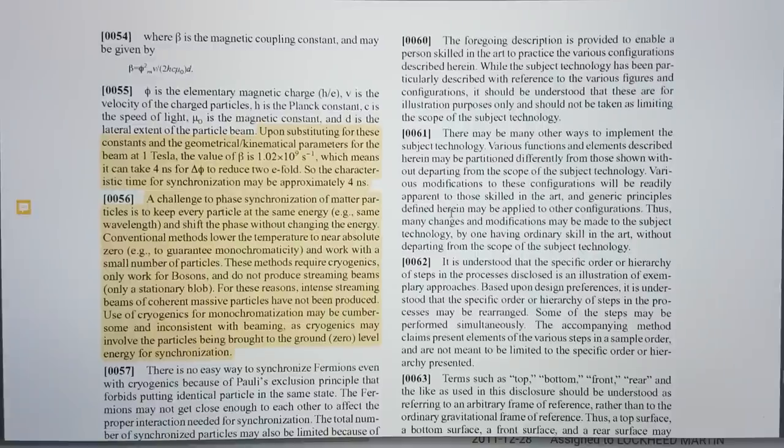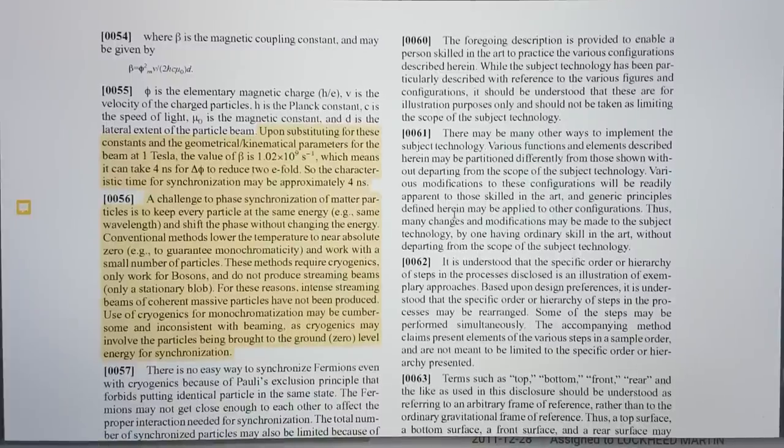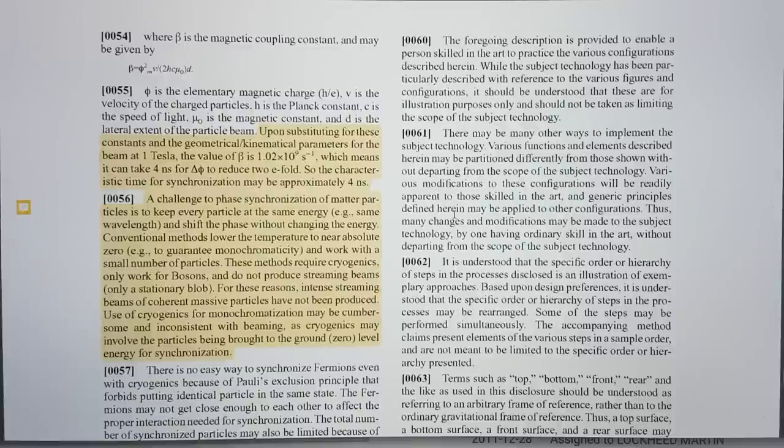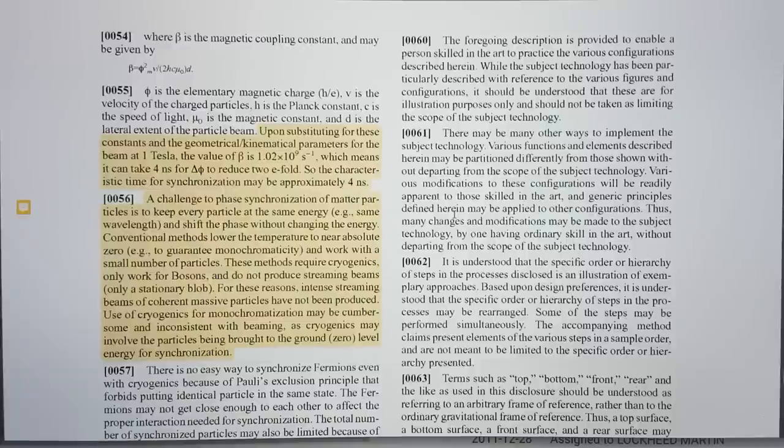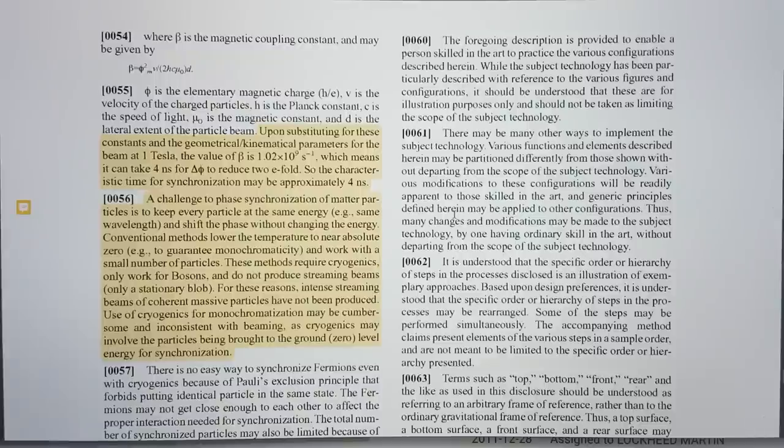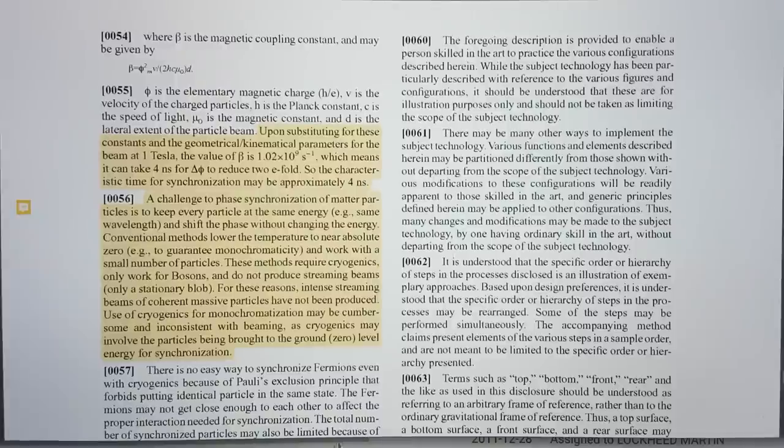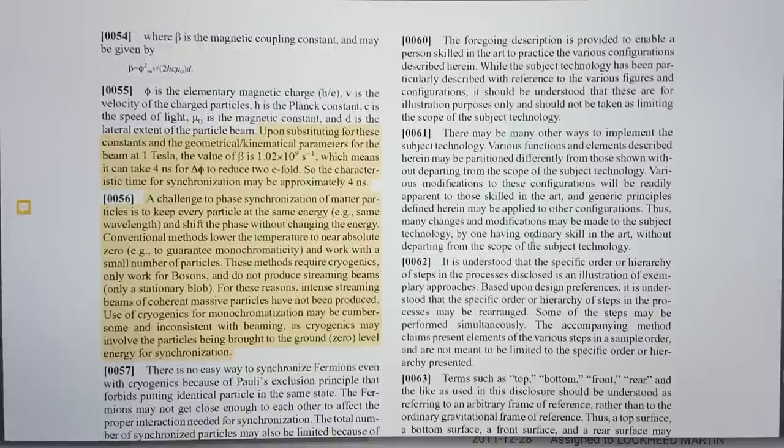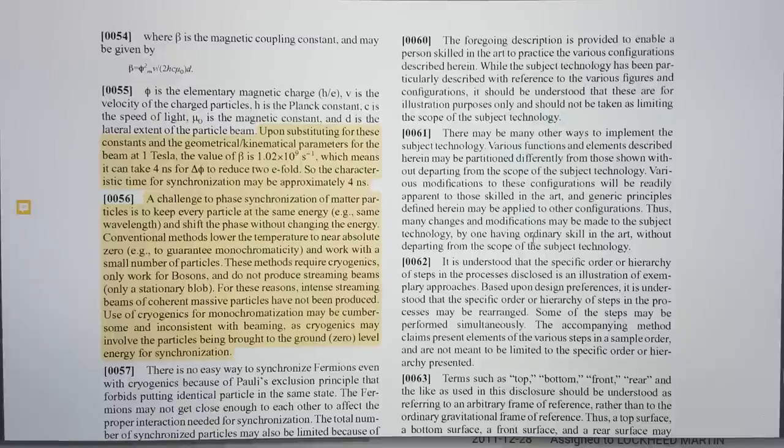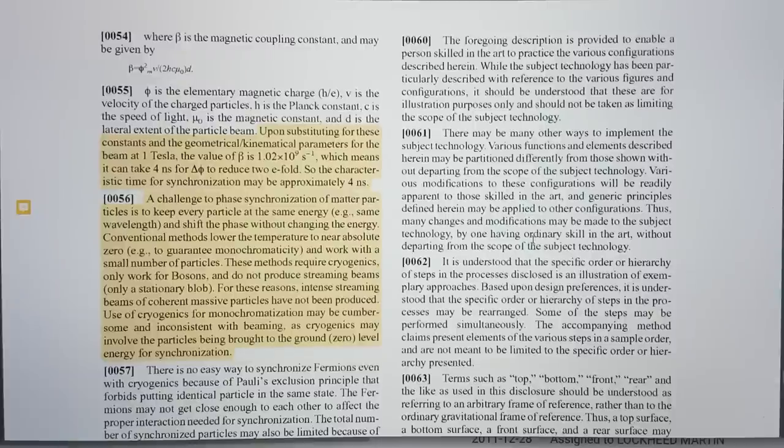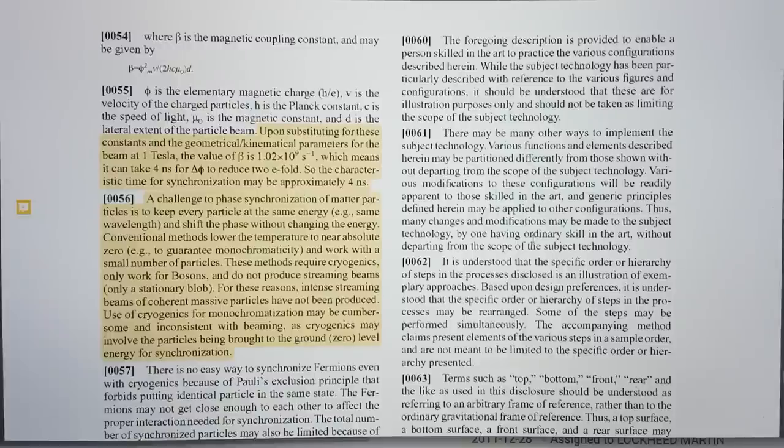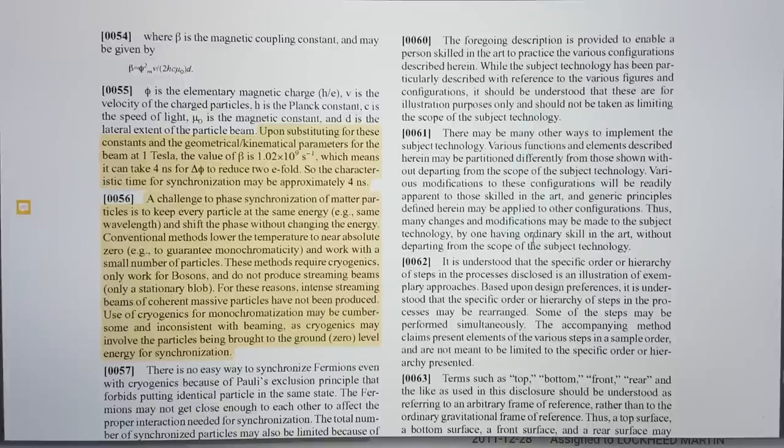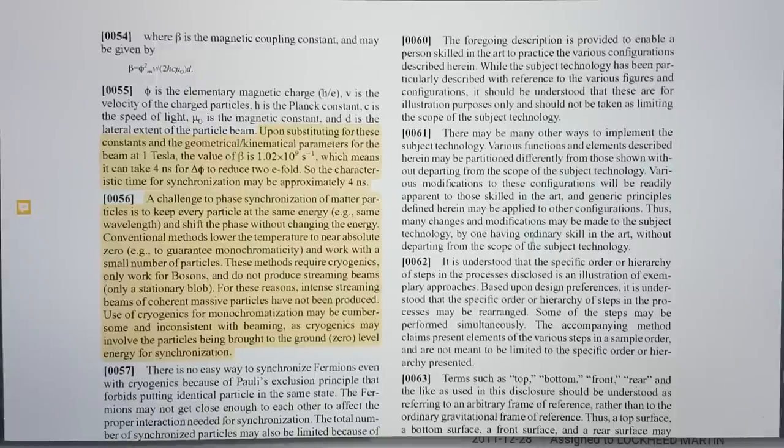If you wanted to use this technology to create a cloaking device and you had to move the fake thing that you are using to cloak, 4 nanoseconds is faster than the eye or any camera can perceive practically for most uses. This becomes a very practical technology for that application. A challenge to phase synchronization of matter particles is to keep every particle at the same energy, the same de Broglie wavelength, and shift the phase without changing the energy. Conventional methods lower the temperature to near absolute zero to guarantee monochromaticity and work with small number of particles. These methods require cryogenics, only work for bosons, and do not produce streaming beams, only a stationary blob. For these reasons, intense streaming beams of coherent massive particles have not been produced.